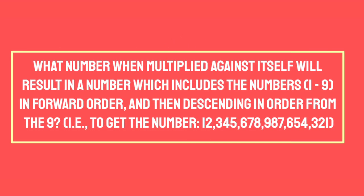What number, when multiplied against itself, will result in a number which includes the numbers 1 through 9 in forward order, and then descending from 9 — i.e., to get the number 12,345,678,987,654,321?